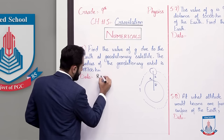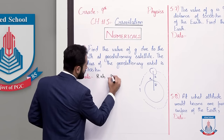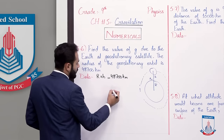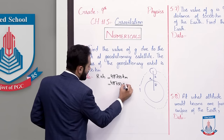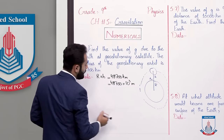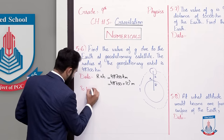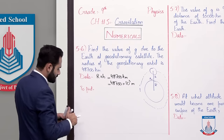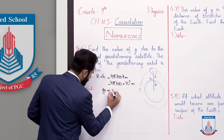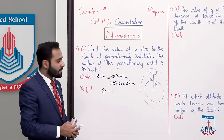r plus h equals 48,700 km. First of all, we convert this to meters: 48,700 multiplied by 10 to the power 3 meters. Now, because the value of g is at a specific height, we represent it as g_h, which is gravity at some height.